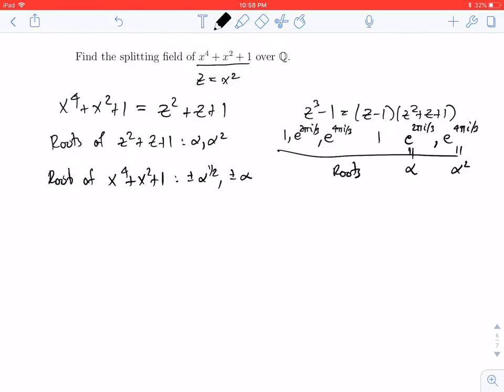If we rewrite in terms of exponentials, this is plus or minus e to the πi over 3, and plus or minus e to the 2πi over 3. We found our four roots.